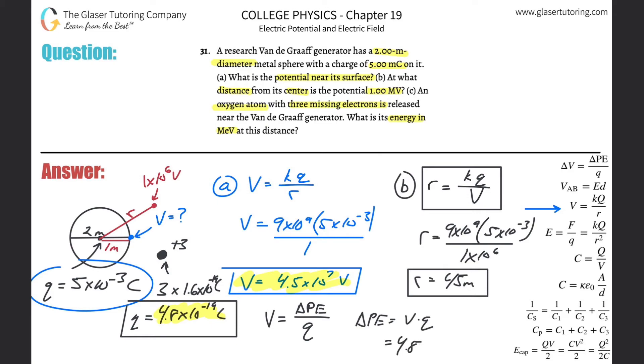The voltage here was 4.5 times 10 to the 7th, multiplied by the charge now of 4.8 times 10 to the negative 19th. So 4.5 times 10 to the 7th multiplied by 4.8 times 10 to the minus 19th gives us 2.16 times 10 to the negative 11th. That will be in terms of joules, and that will be the energy in joules.